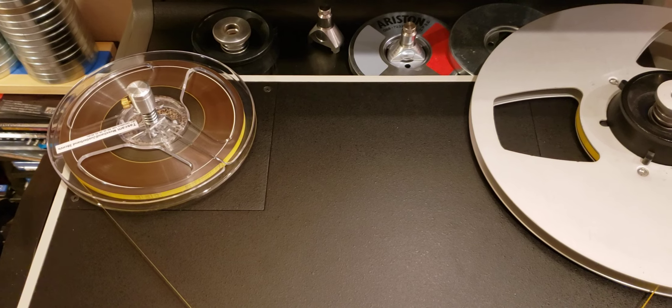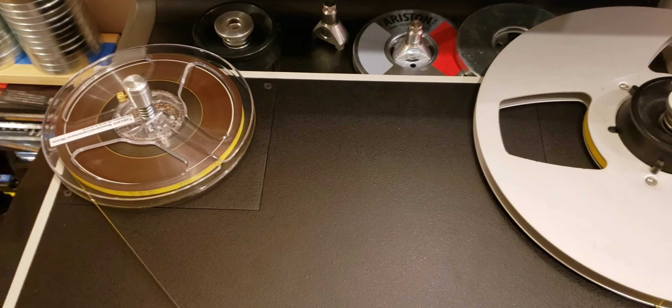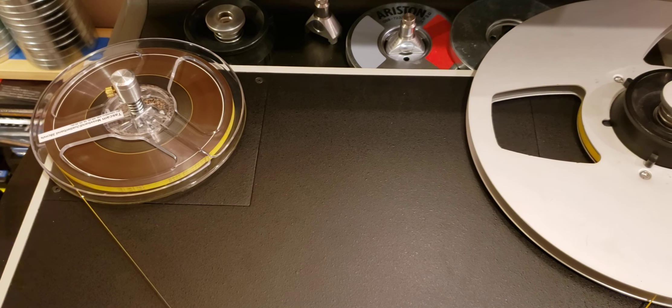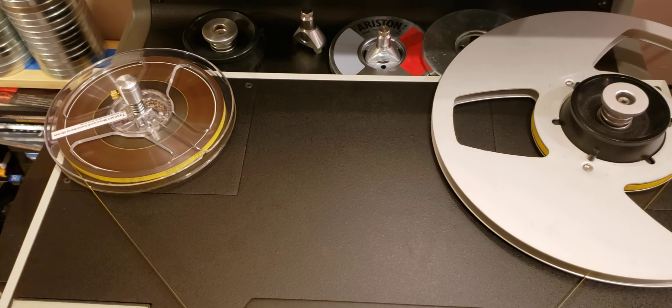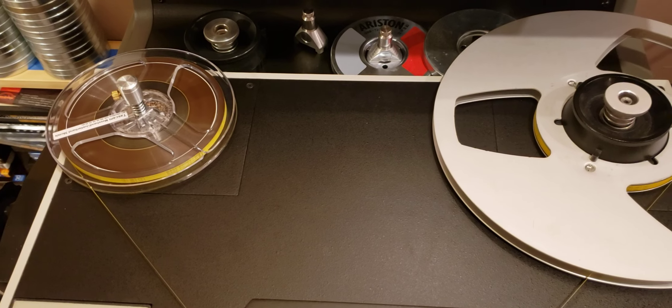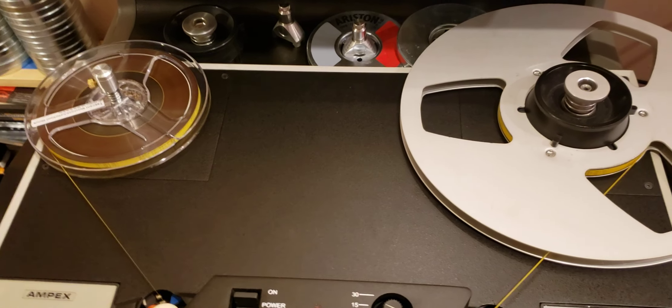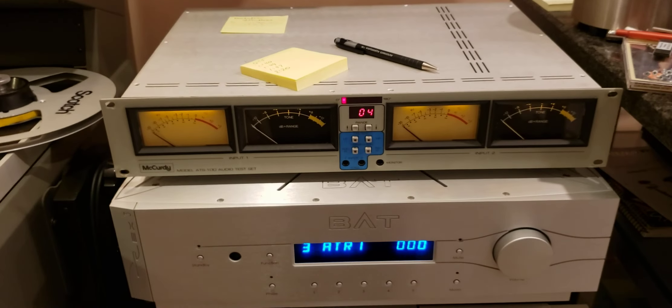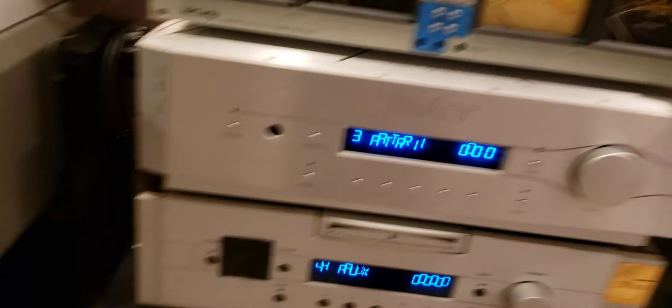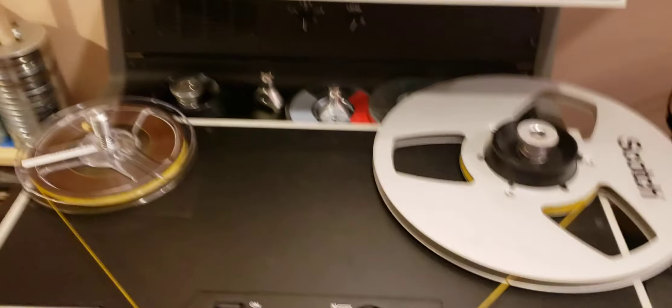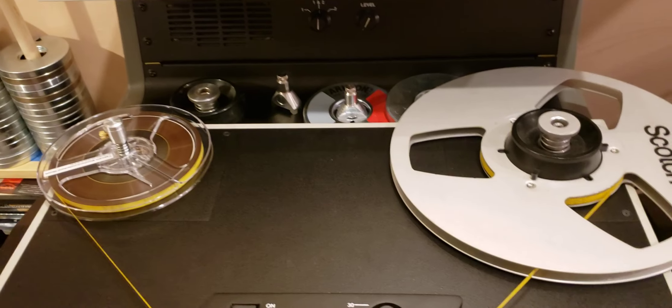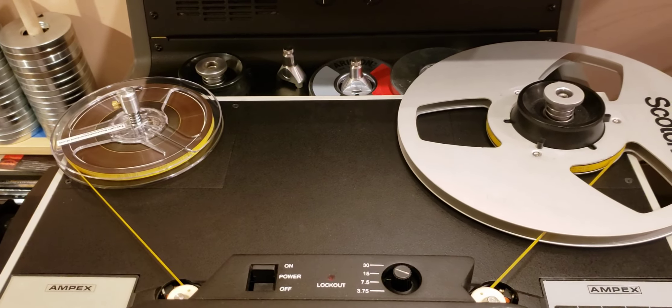The first tone on this tape is 400 Hertz recorded at 320 nanowebbers. Now that's a pretty high level, it's already about 5 dB above the standard level of 185 nanowebbers. And we're going to be looking at the McCurdy meter and also my digital scope. So let's start the tape and see what kind of calibration we get.